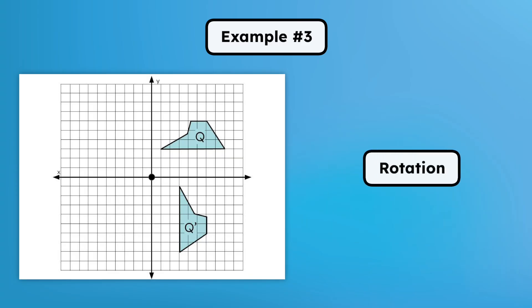Pre-image Q was rotated. Whether it was a clockwise or counter-clockwise rotation really depends on how you look at it. Pre-image Q could have rotated clockwise like this to create image Q prime. Or it could have rotated counter-clockwise like this to create image Q prime. Both directions of rotation can create the same image.